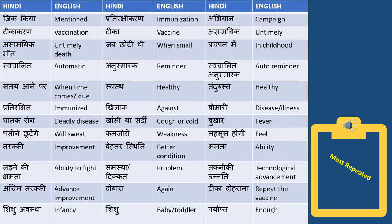The first word is 'zikr kia' — kai baar dialogues mein puchha jata hai ki aap ne is teeka ke baare mein zikr kia tha, so 'zikr karna' means 'mentioned.' 'Prathirakshikaran' means immunization — 'raksha' means protection, so immunization is prathirakshikaran. 'Abhiyan' means campaign or drive, so an immunization drive is 'prathirakshikaran abhiyan.' The next word is 'tika karan' — 'tika' means vaccine, and 'tika karan' means vaccination.